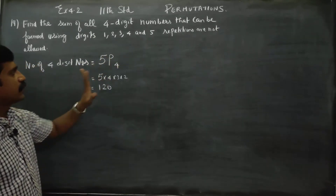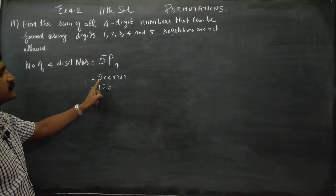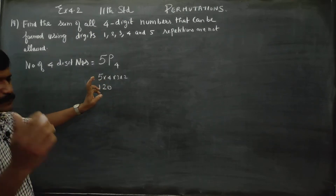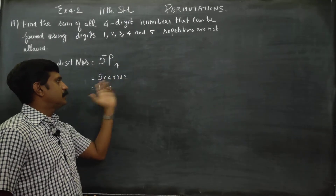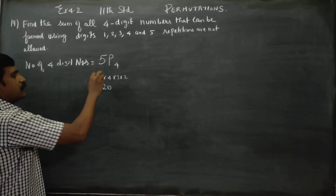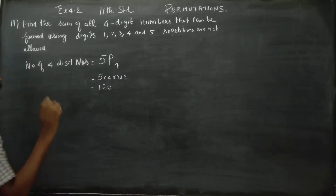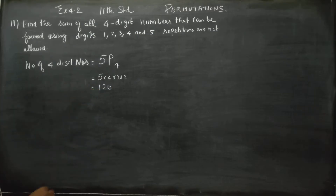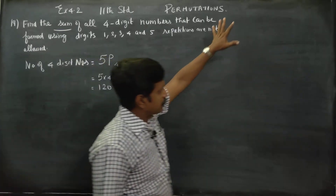Repetitions are not allowed. There are 5 chances in the first place, 4 chances in the second place, 3 chances in the third place, and 2 chances in the fourth place. By the fundamental principle of counting, the answer is 120. Each and every number is unique.